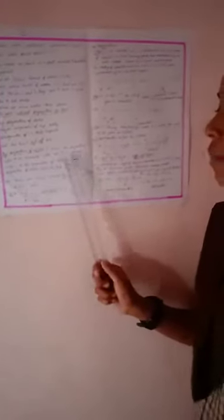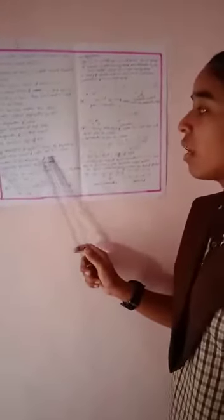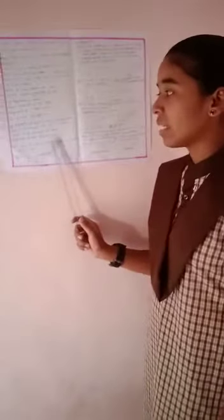First, dehydration of alcohols. Dehydration refers to the removal of a water molecule and is a common method for preparing alkenes.